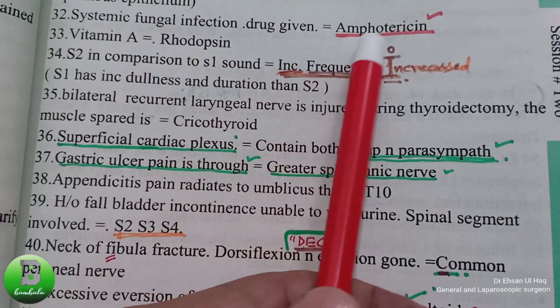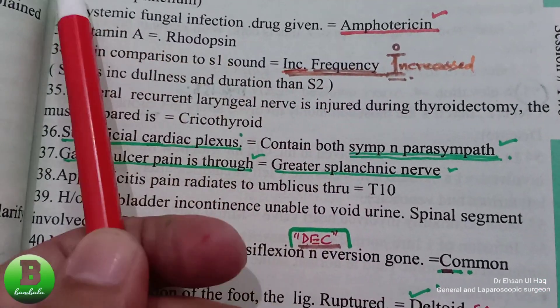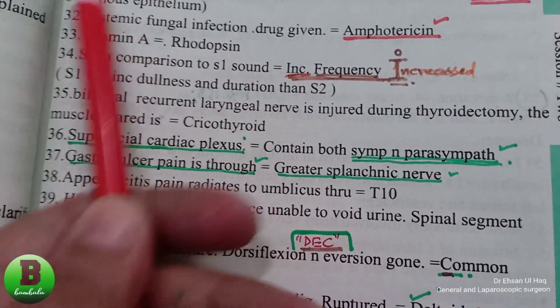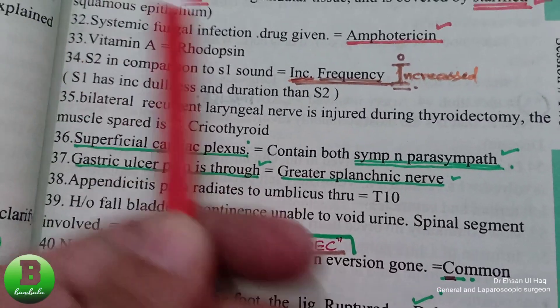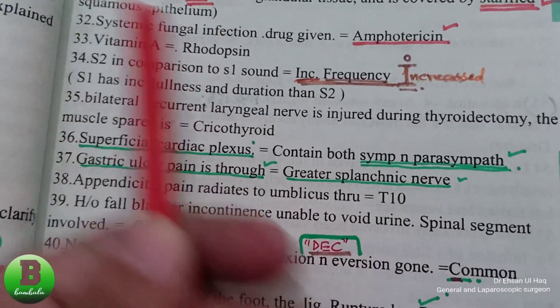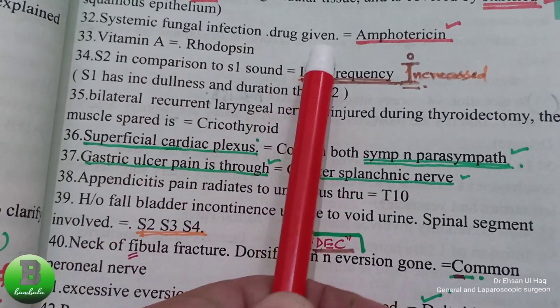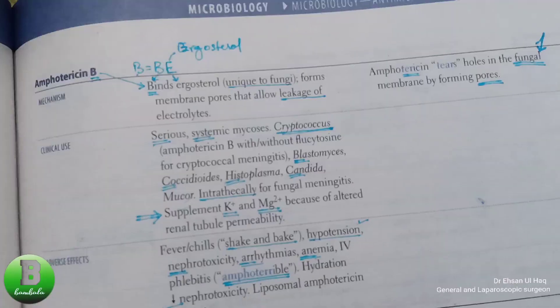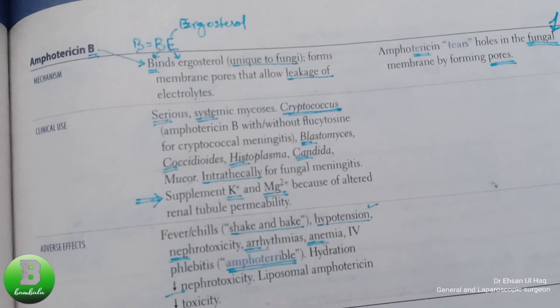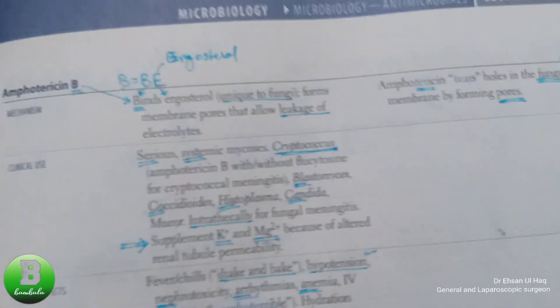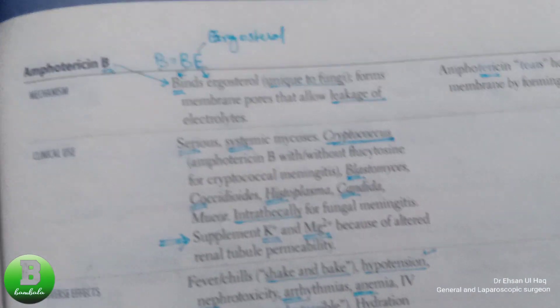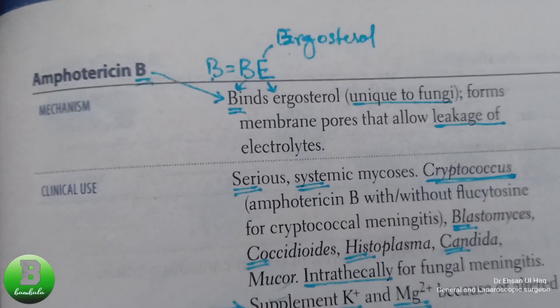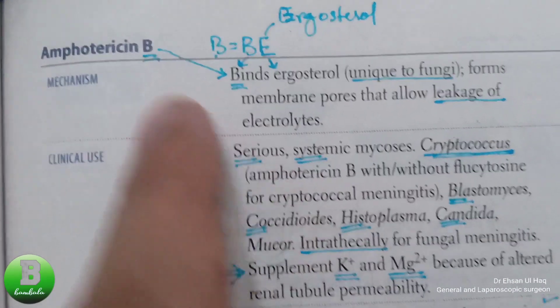For a systemic fungal infection scenario, the drug given is Amphotericin B. When asked the name of the drug for systemic fungal infection, the answer is Amphotericin B.